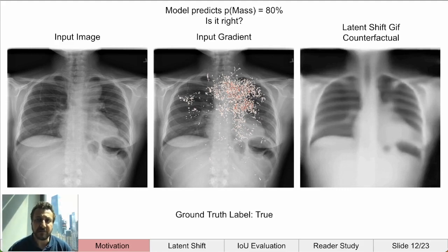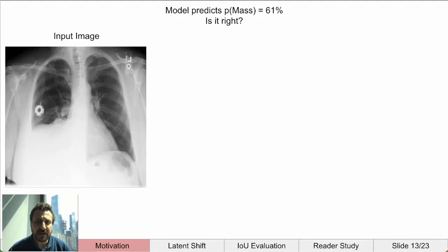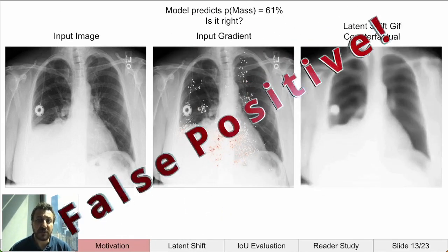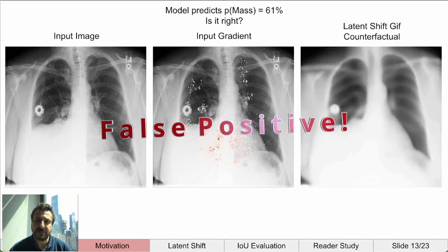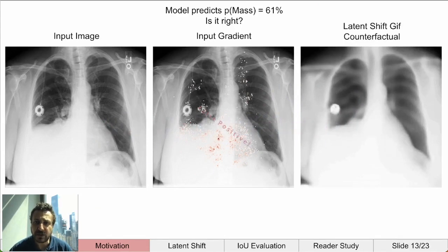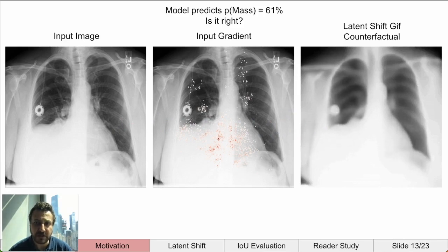Let's take a look at another positive prediction of mass. When we generate the counterfactual, it is unclear where the mass is — maybe the network is confused. The ground truth label for this image is false for mass. Using this counterfactual animation, we were able to gain a much better understanding of why the model made its prediction, which allowed us to doubt it more.